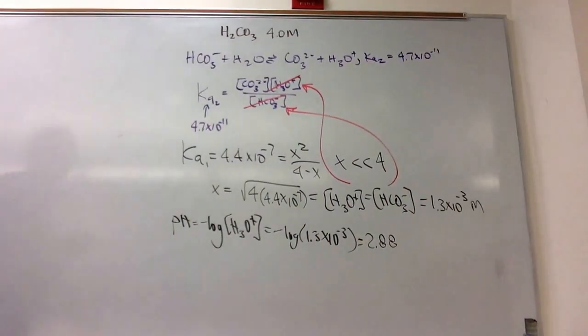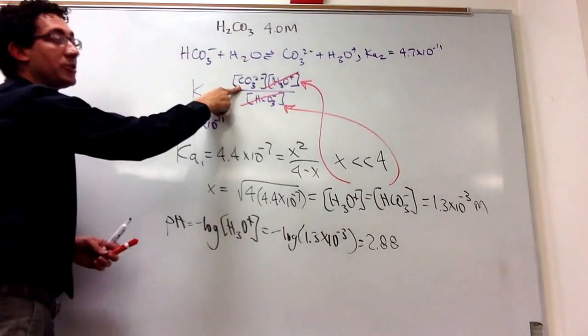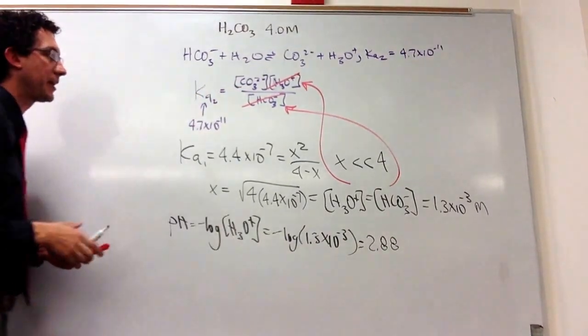And so the last concentration that you have yet to find is the CO3 2 minus concentration, which will equal Ka2. And that's always going to be true. It wouldn't be true, say, in a common ion, but in a typical problem it would be true, where the second loss of the proton will equal Ka2. So the concentration of species that has just lost two protons is equal to Ka2.